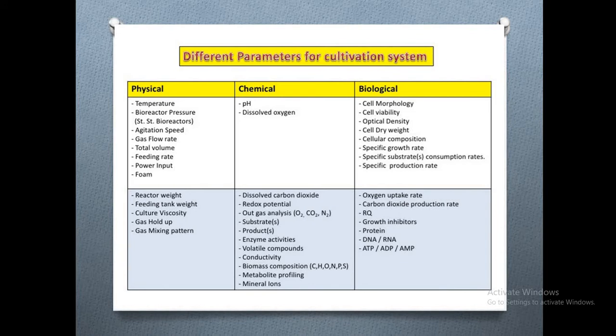Other physical parameters include feeding rate, power input — the power used for agitation, aeration, etc. — and foam protection. Foam protection should be carefully controlled because it can lead to both contamination and containment issues. Additionally, reactor weight, feeding tank weight, culture viscosity, gas hold-up, and gas mixing pattern are all important. Baffles are typically used in the fermenter to break up gases.